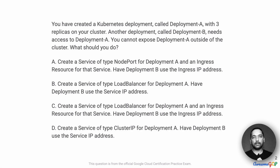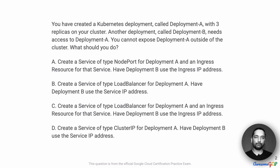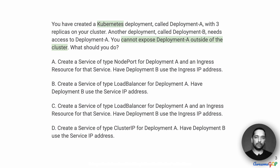You have created a Kubernetes deployment called Deployment A with three replicas on your cluster. Another deployment called Deployment B needs access to Deployment A. You cannot expose Deployment A outside of the cluster. What should you do? The key parts of this question are that it is a Kubernetes deployment, and that you want to keep Deployment A private within the cluster and not expose it outside.